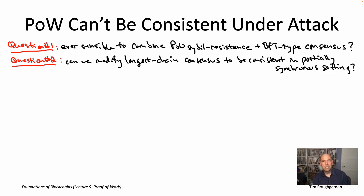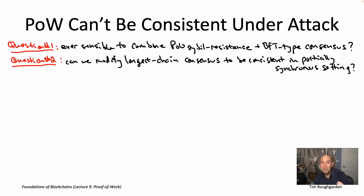We've proven a lot of nice guarantees about longest chain consensus, but all of those guarantees are for the synchronous model, not the partially synchronous model. As a researcher or engineer, you always want to keep doing better. We have longest chain consensus with great guarantees in the synchronous model — but maybe we could tweak the protocol, adding just a little extra complexity, so that in addition to those nice guarantees, we can also get consistency in the partially synchronous model.